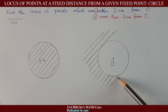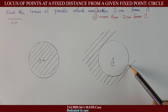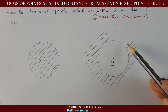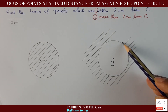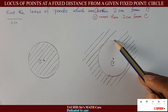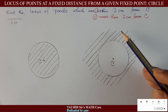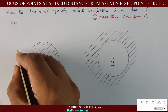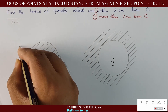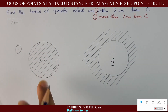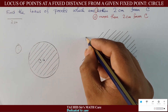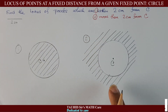To summarize: when we are told 'more than some centimeters,' we shade outside the circle. And if we are asked 'within,' we shade inside. This is the rule — question one (within two centimeters) shades inside, and question two (more than two centimeters) shades outside.